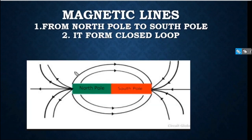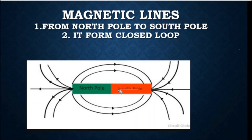The magnetic field is applied from the north pole. So outside the magnet, the direction goes from north pole to south pole, but inside the magnet it goes from south to north. These are our magnetic field lines.